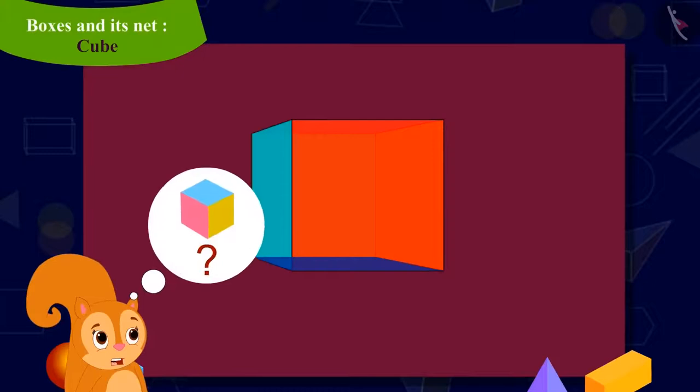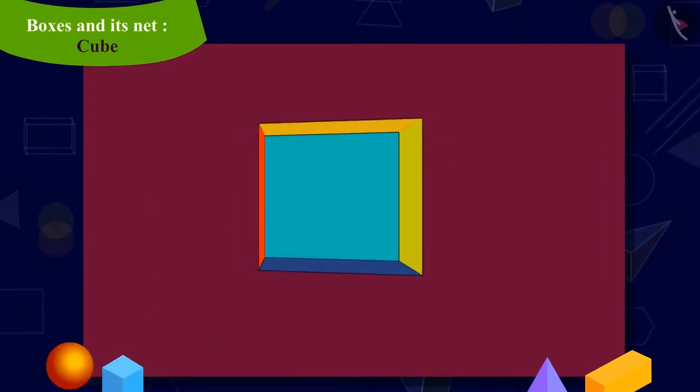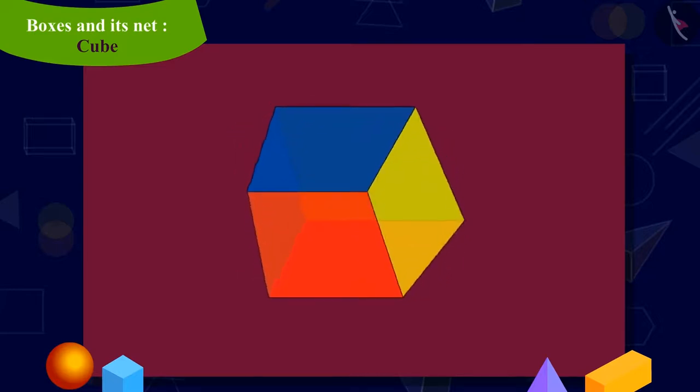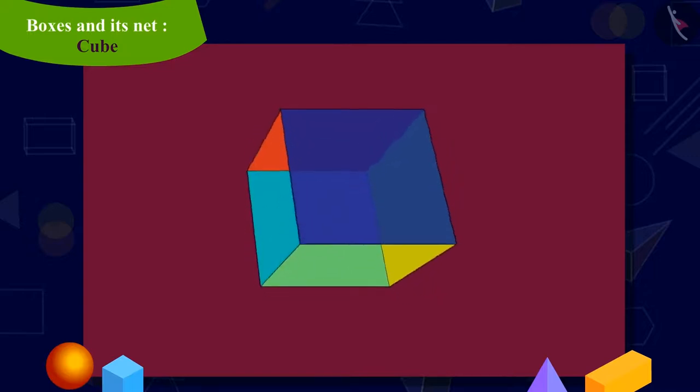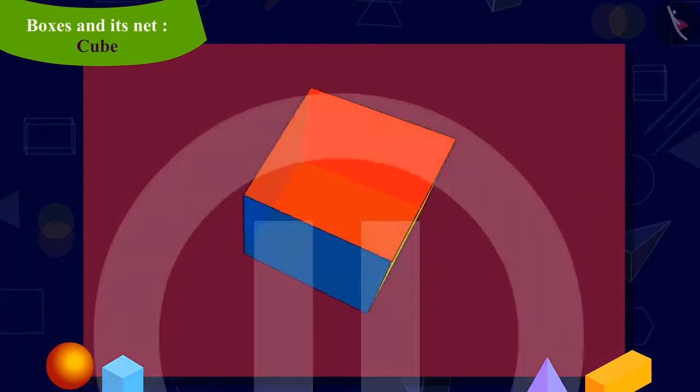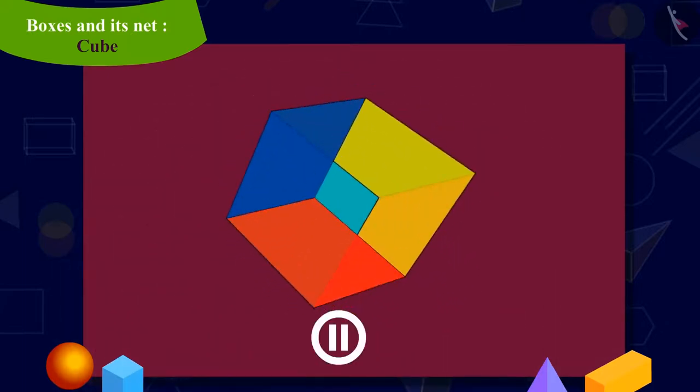Kids, can you help Chanda in making a third cube-shaped box? Keep in mind that all the six faces in your figure should be square. And when folded, they should form a cube-shaped box. You can stop this video and try to make it in your notebook.